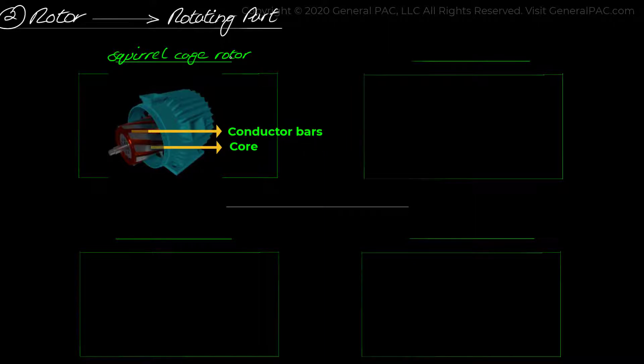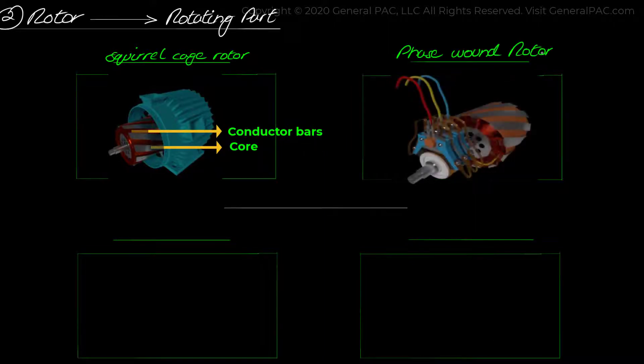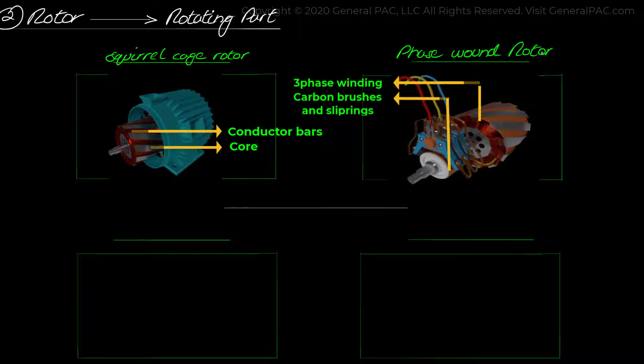The other is the phase-wound motor, which consists of three-phase winding similar to stator winding and has an option of adding external resistance through carbon brushes and slip rings.